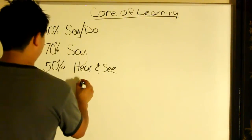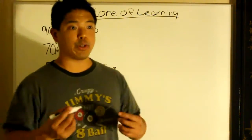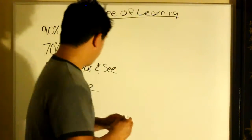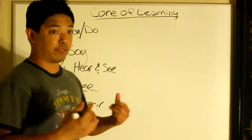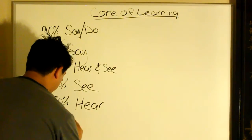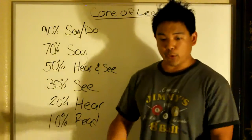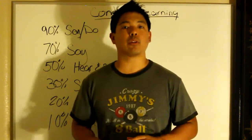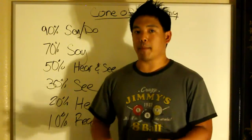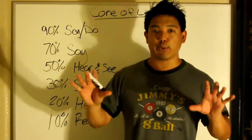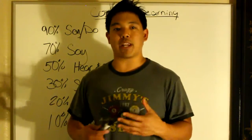If you break it down to just what we see — things people do or things around you — after two weeks you'll remember 30%. If you just hear things, it breaks down to 20%. And 10% of things we read. So if you just read books alone in a quiet room, this is the most important part: we only remember 10% of what we read, meaning we forget 90% of things we read in a book after two weeks.